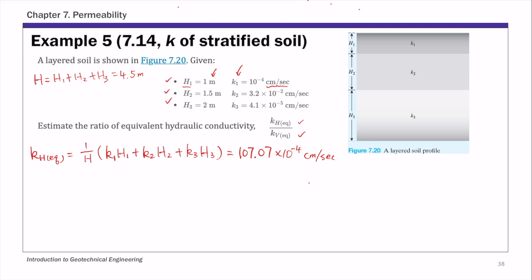And then for the vertical equivalent hydraulic conductivity, kv_eq, the equation for this vertical equivalent k is capital H over h1 over k1 plus h2 over k2 plus h3 over k3.